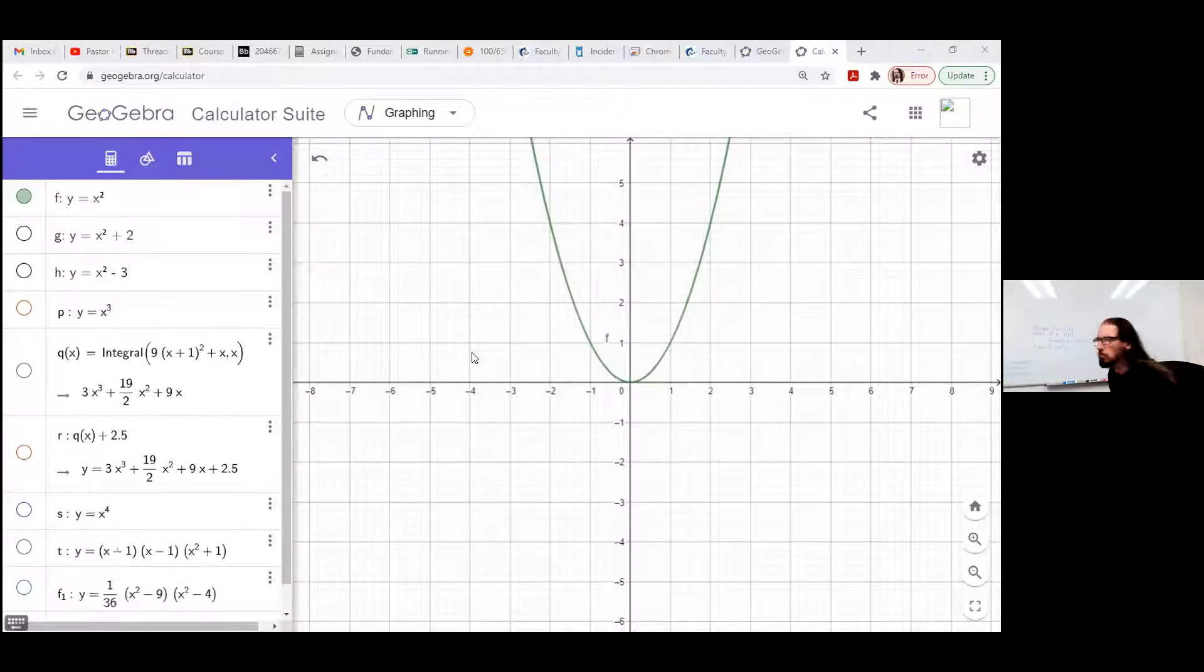It's at (0,0), and the vertex is where it changes from a decrease to an increase as we move left to right. So one turn or turning point.